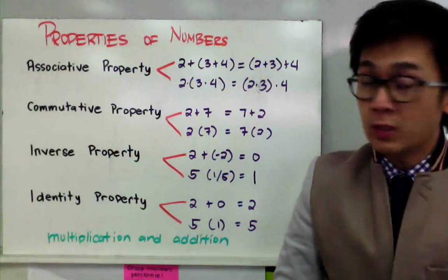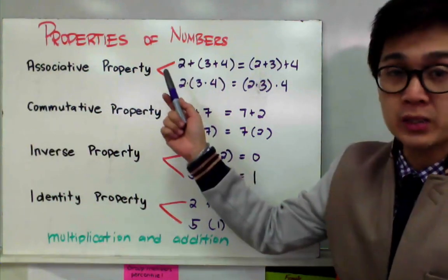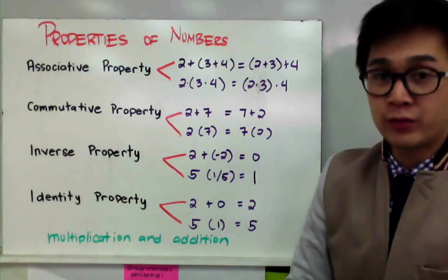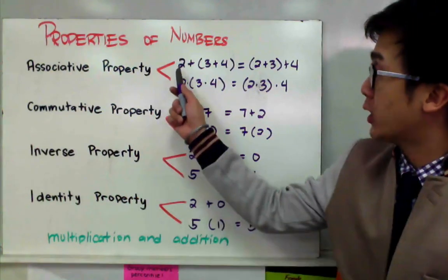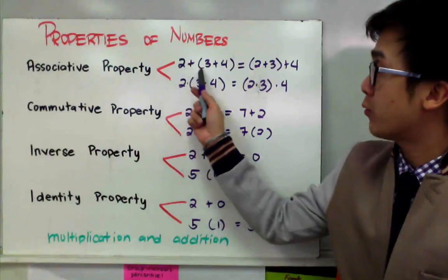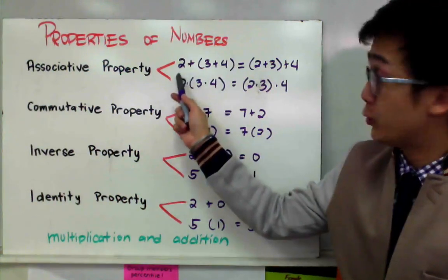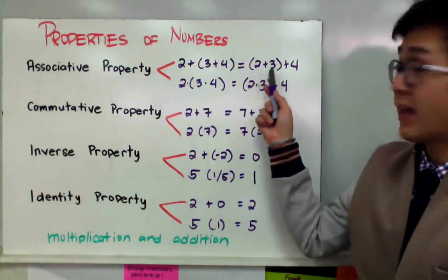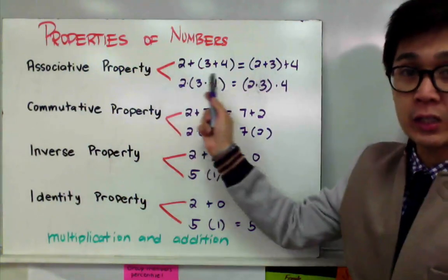For example, we have the associative property. In the associative property, if we have three numbers that we are going to add together, it doesn't matter which number you add first because the answer will still be the same whichever order you put in your operation. So if I need to add two, three, and four — if I add three and four first and then add it to two, it will still be the same as adding two and three first and then four afterwards. This is the associative property under addition.